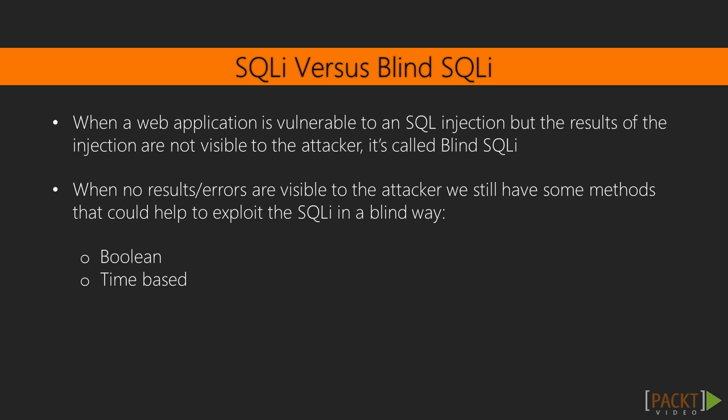When a web application is vulnerable to SQL injection but the results of the injection are not visible to the attacker, it's called blind SQL injection. Admins, developers, and frameworks are handling errors in order to avoid leaking information. When no results or errors are visible to the attacker, we still have some methods that could help exploit the SQL injection in a blind way. The first method is called Boolean. This method is based on injecting payloads that alter the outcome of the original query, which results in different returned page content.